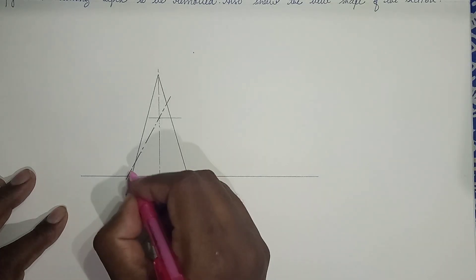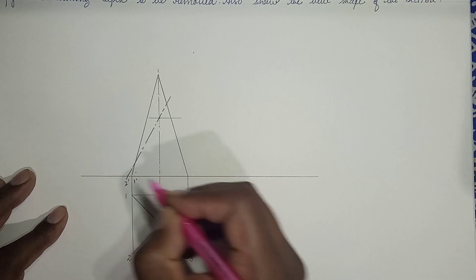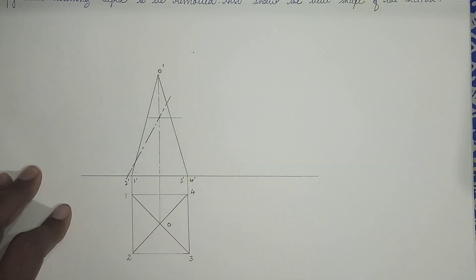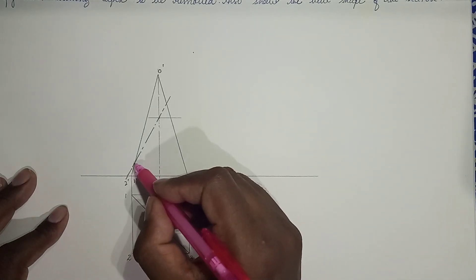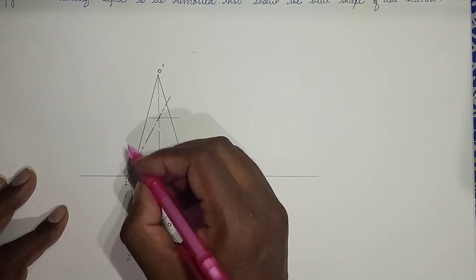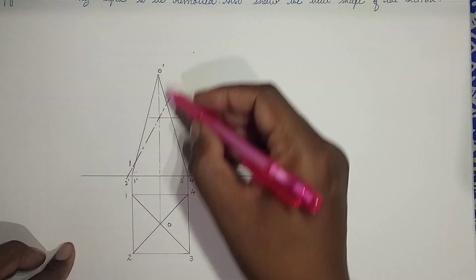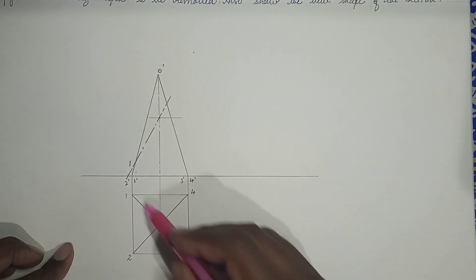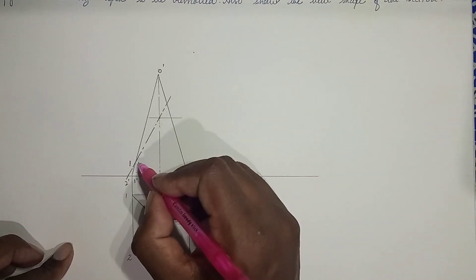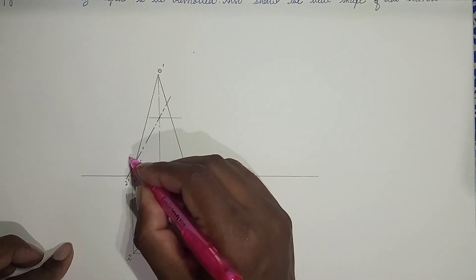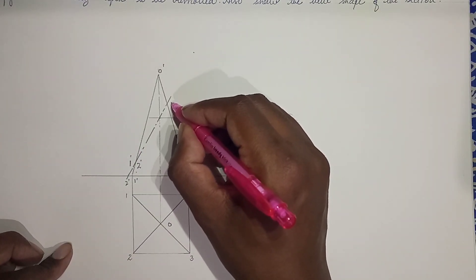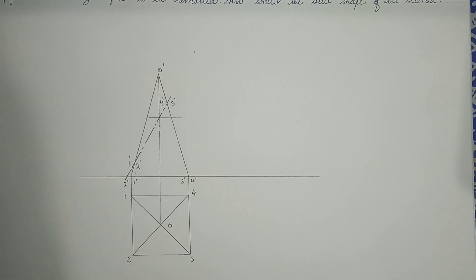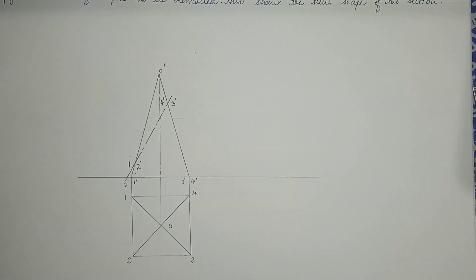We label the points: this is one, two, three, and four — with O-dash for the apex — giving us one-dash, two-dash, three-dash, four-dash. Now we label the section points. The section plane is cutting both sides, including the diagonal which represents the slant edge. So we get section points: one-dash, two-dash, three-dash, and four-dash.